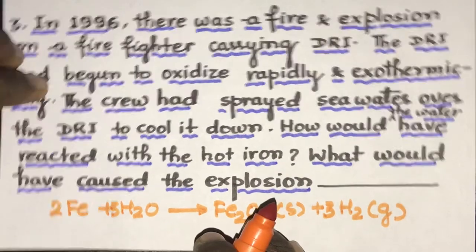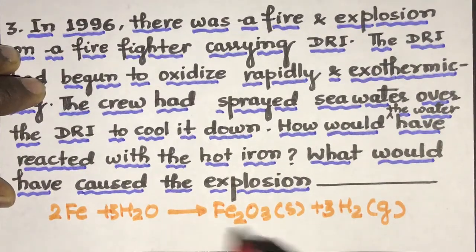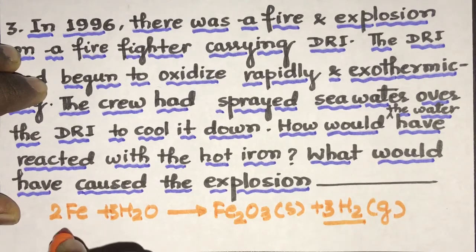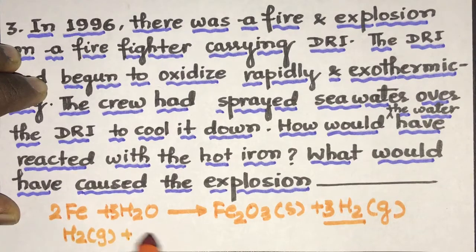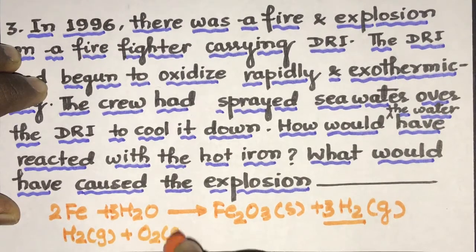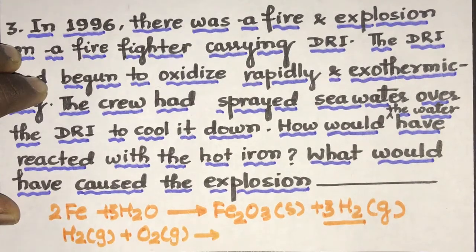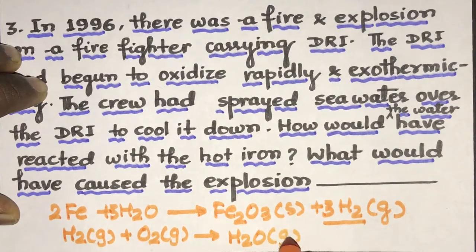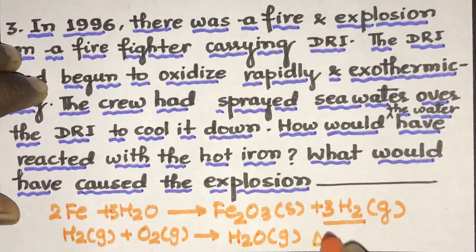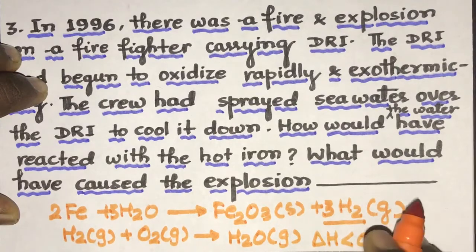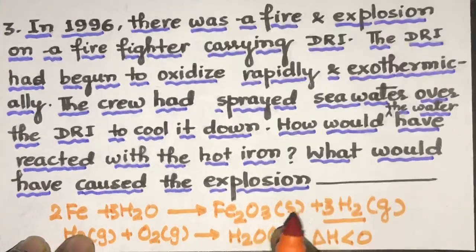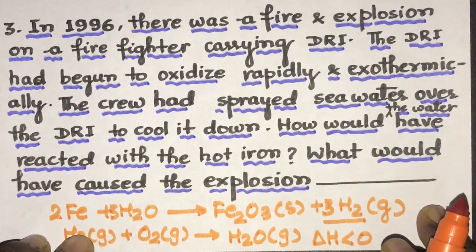Now, the explosion would have resulted from the hydrogen-oxygen reaction because this hydrogen is a gas and at high temperature, it reacts with oxygen from the atmosphere to form H2O gas. And this reaction is highly exothermic, so delta H is less than 0 for this. And this would have a reason for the explosion.